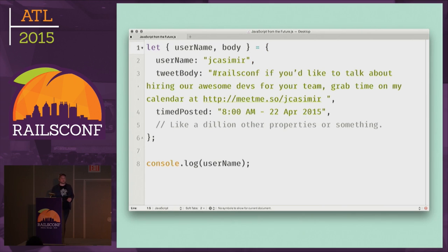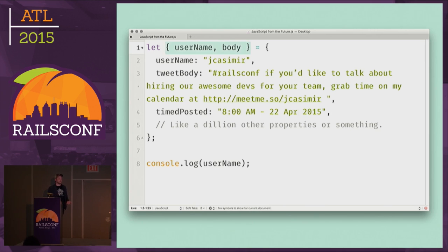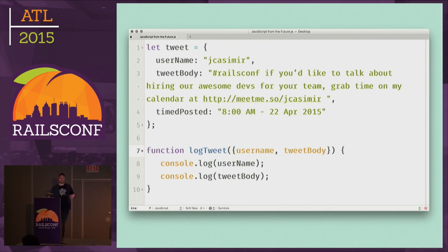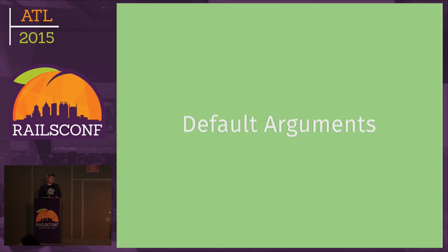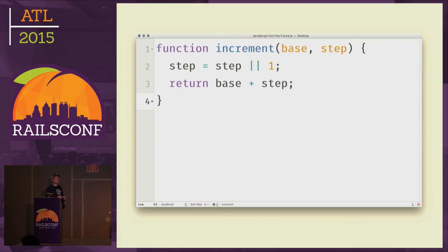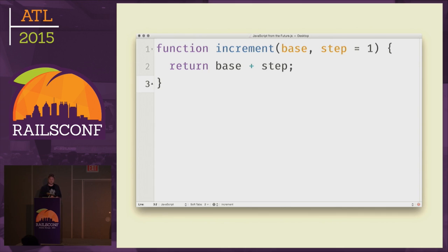We also have some syntactic sugar for working with objects. Say you've pulled a tweet from the Twitter API — there's a lot of stuff you get, and you just want one or two properties. Destructuring syntax will allow you to split up the properties of that object and define them as independent variables. You can also use that in your functions to automatically assign different properties to local variables. We also get default arguments — Ruby has had this for a while — so instead of the old workaround, you can just define a default argument directly. So there's a lot of really great stuff and you don't have to memorize strange tricks or weird incantations anymore.